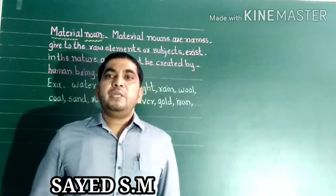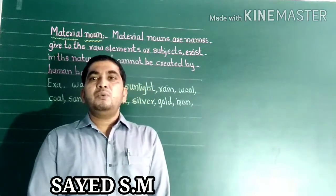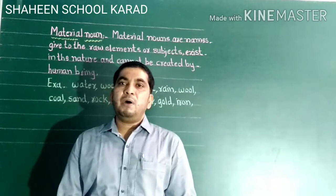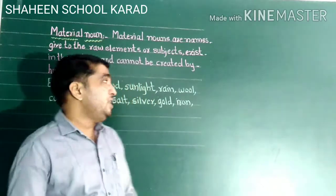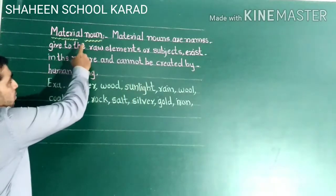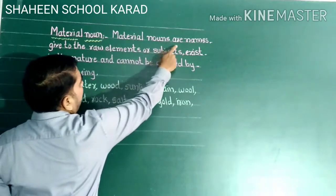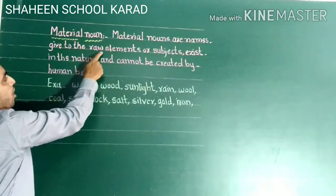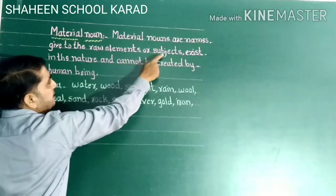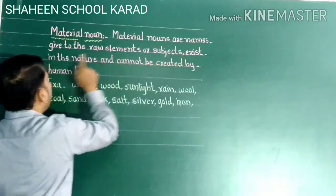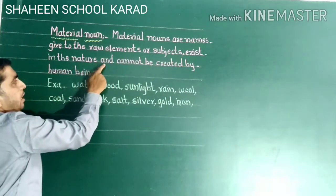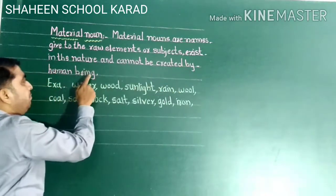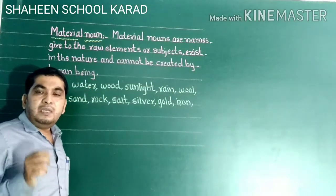Dear student, today we are going to learn Material Noun — in Urdu, Isme Mati. The definition of Material Noun: Material Nouns are names of the raw elements or subjects that exist in nature and cannot be created by human beings.